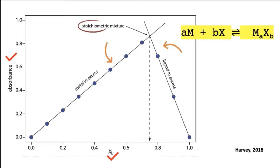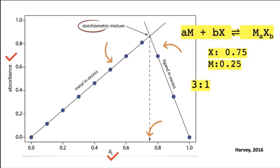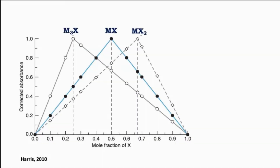In this example, the two lines intersect at the mole fraction of ligand equal to 0.75. It follows that at that point, the mole fraction of the metal is 0.25. If we divide 0.75 by 0.25, we get a ratio of 3 to 1, or 3 moles of the ligand for every mole of the metal. Thus, the formula of the metal-ligand complex is MX₃.